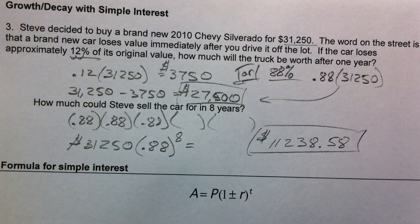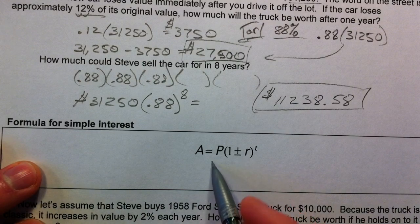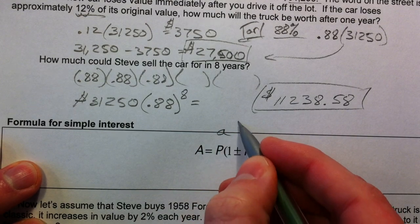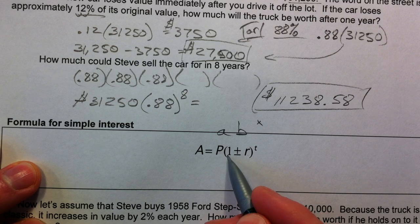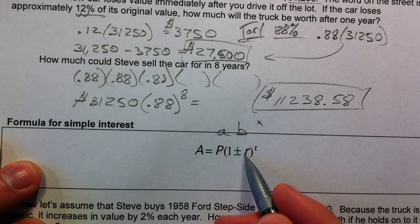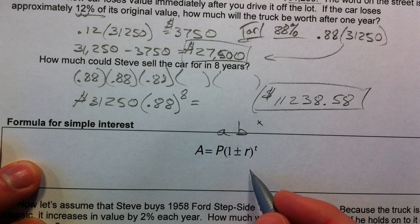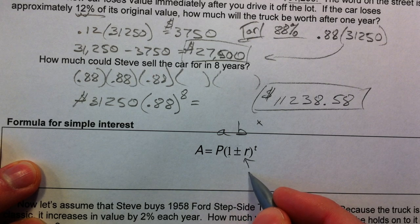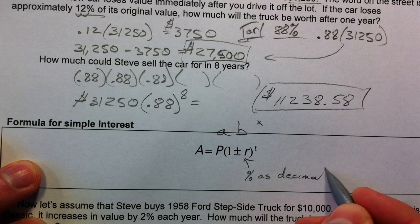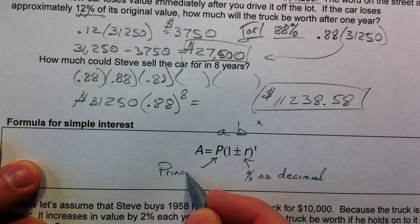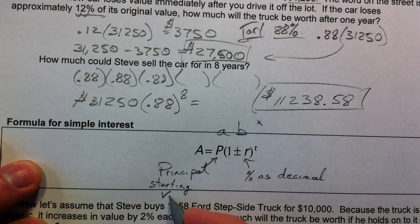So what we used is this is our a times our b raised to the x power. b is our constant multiplier that's replaced by 1 plus the interest rate or 1 minus the interest rate. It's going to be plus the interest rate if it's growing, but we used 1 minus the interest rate, 1 minus 0.12. And so this is the interest rate percent as a decimal. Make sure you recognize that. And this is called the principle. We use that, or that's your starting value, just like your a. So don't think of it as another equation to memorize.